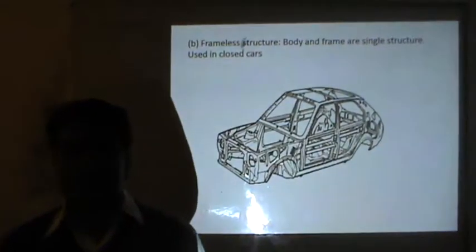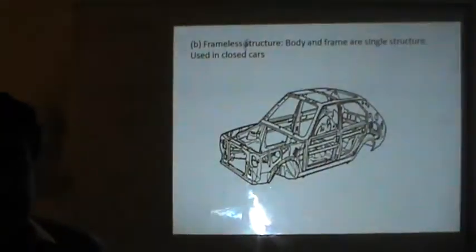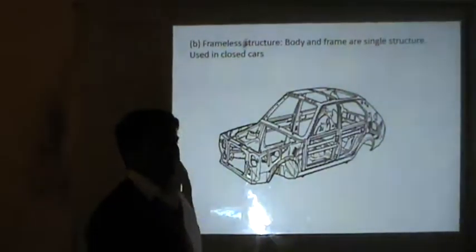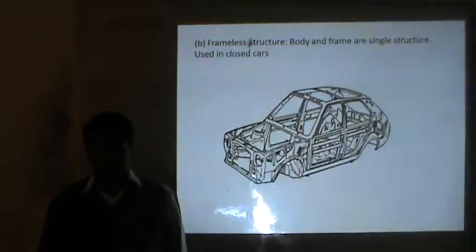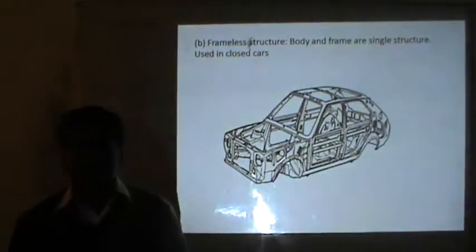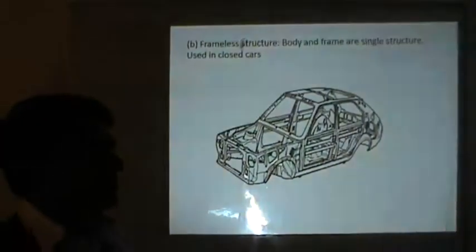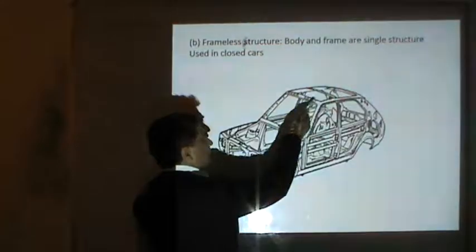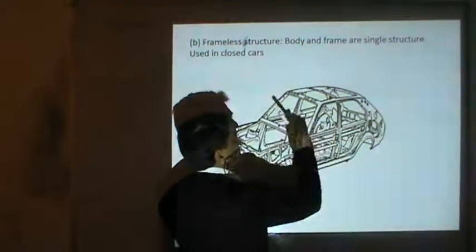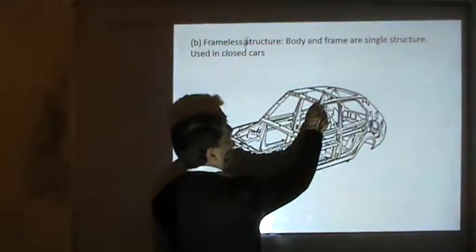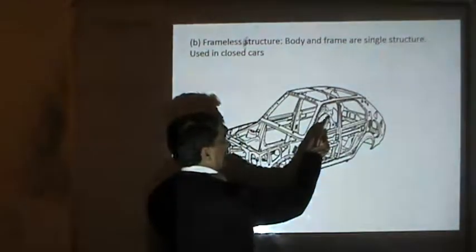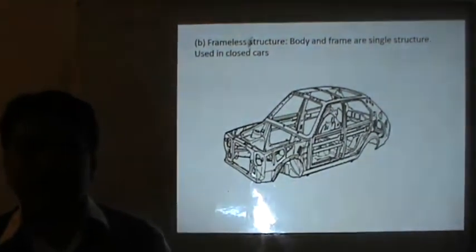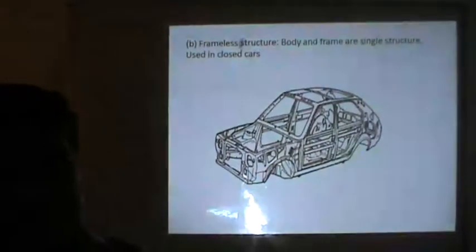A frameless structure generally provides more space and is commonly used in closed cars. If the car is open, without a roof, the structure cannot be frameless because the major load in a frameless structure is carried by the beams — if the vehicle has no roof, those beams are absent and the vehicle's strength decreases. So in open cars we have to use a conventional frame rather than a frameless structure.